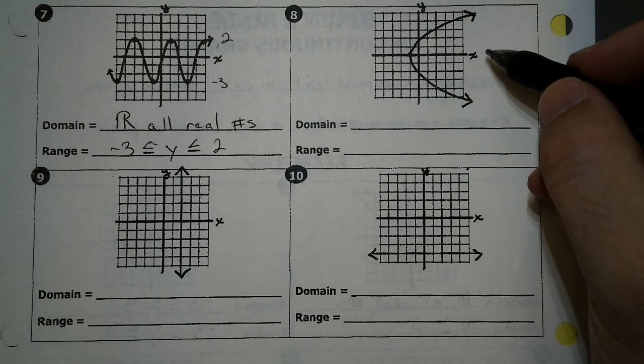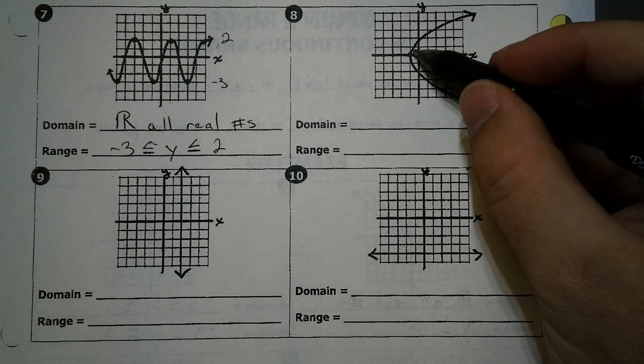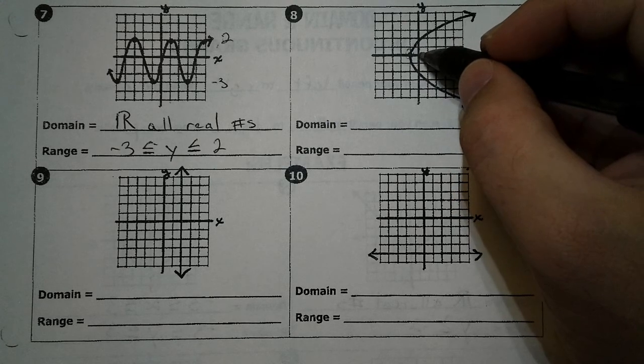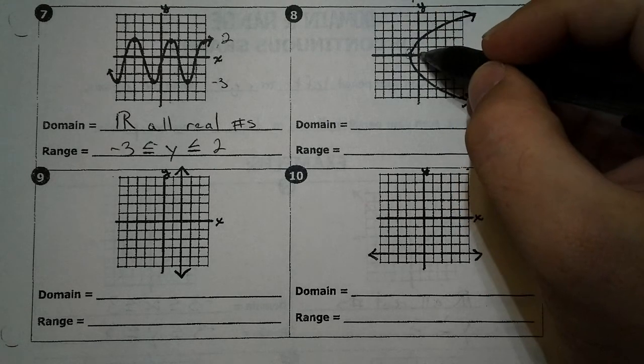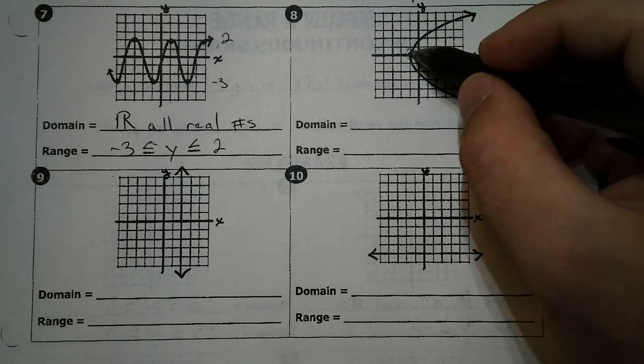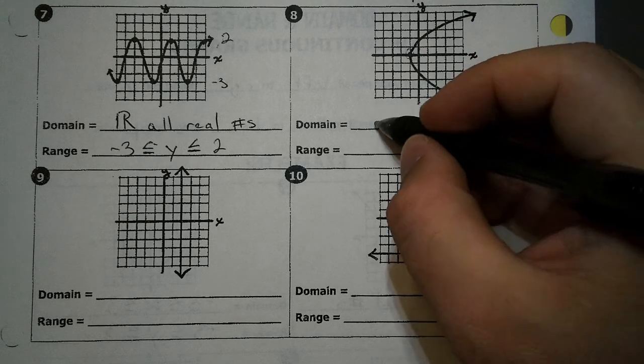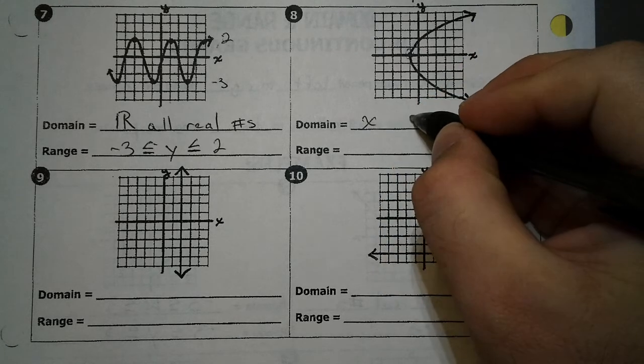Remember, go left to right first. So going to the left, it does have a stop. It stops right there at negative 1 because we're just looking at the x values. When we go to the right, it continues forever. So we're just comparing our x values to negative 1.